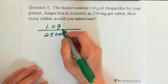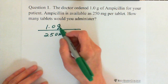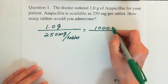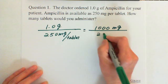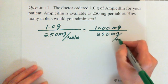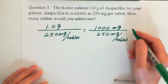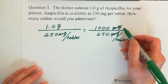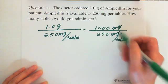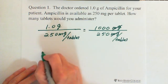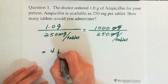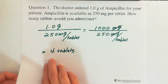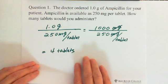But the two units are not matching — grams versus milligrams — so we need to convert grams to milligrams by multiplying by one thousand. One times one thousand equals one thousand milligrams. Now we have one thousand milligrams divided by 250 milligrams per tablet — the milligrams cancel out, and the unit becomes tablets. The answer is one thousand divided by 250 equals four tablets. So for the ordered one gram of ampicillin, the answer is four tablets.